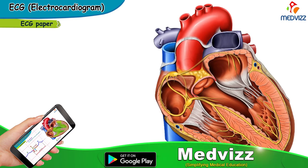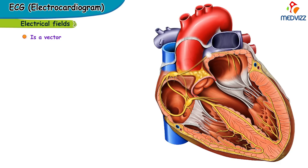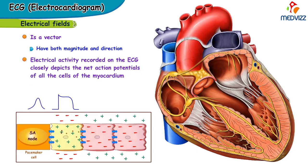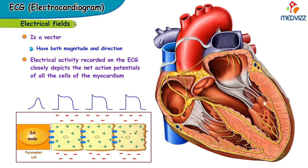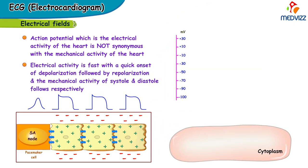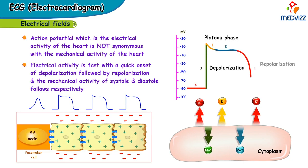Now let's get into the concept of electrical fields. An electrical field is basically a vector, and all vectors have both magnitude and direction. The electrical activity recorded on the ECG closely depicts the net action potentials of all the cells of the myocardium. Note that the action potential — the electrical activity of the heart — is not synonymous with the mechanical activity of the heart. The electrical activity is fast with a quick onset of depolarization followed by repolarization, and the mechanical activity of systole and diastole follows respectively.